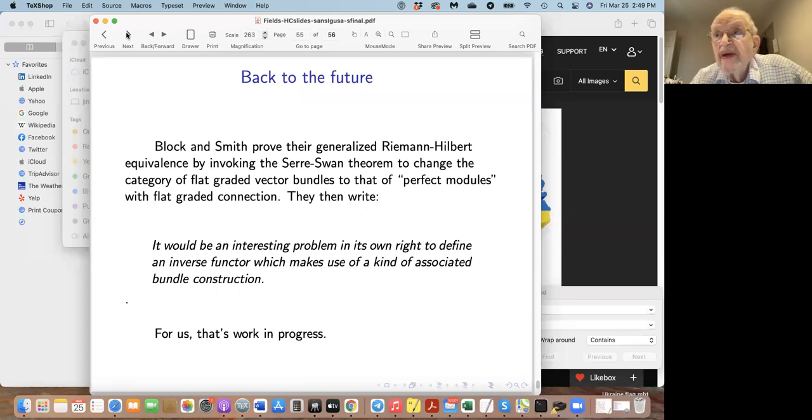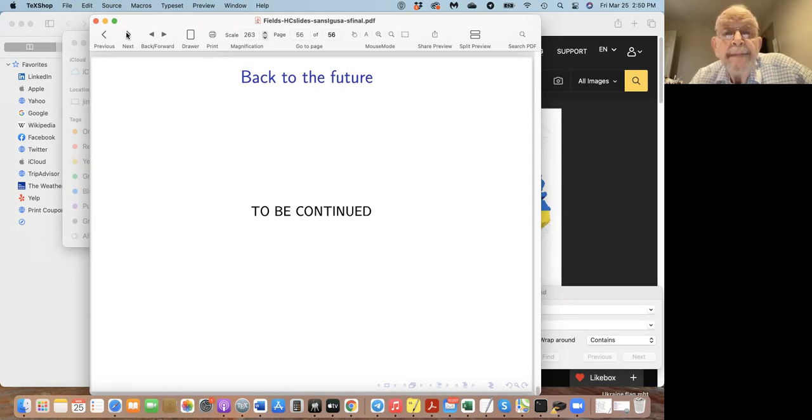But now back to the future. Block and Smith proved their generalized Riemann-Hilbert equivalence by first invoking the Serre-Swan theorem to change the category to the category of perfect modules with a flat graded connection. Similarly, Lazarev, Holstein and Chuang have done something similar using cohesive modules. Notice you're not staying in the category in which the problem was phrased. They admit it would be an interesting problem in its own right to define an inverse functor which makes use of a kind of associated bundle construction. That's what caught my eye. I think it's been a couple of years now and I'm still trying to make sense out of that. That's work in progress, definitely for us and perhaps my whole workshop group. That's to be continued.